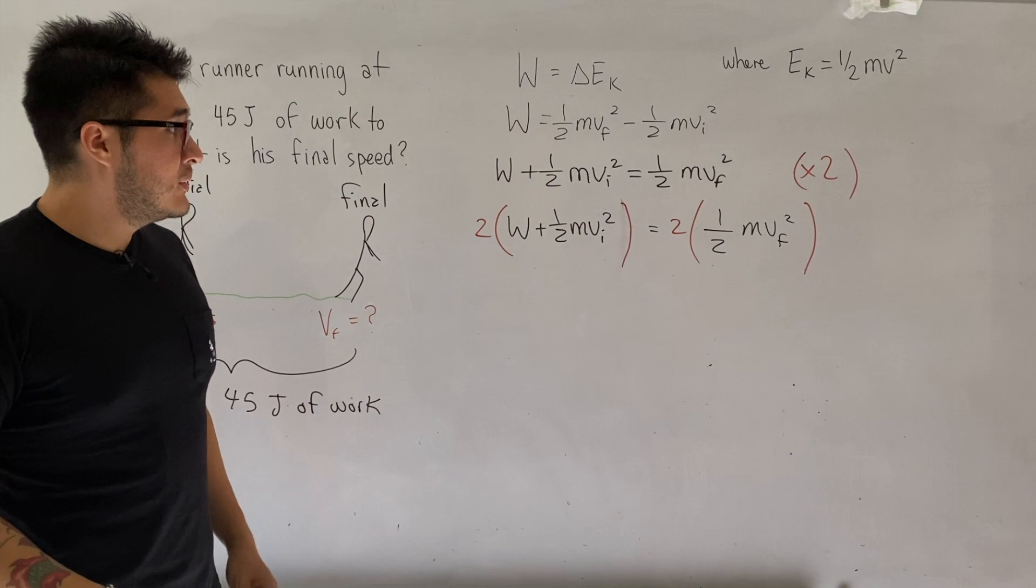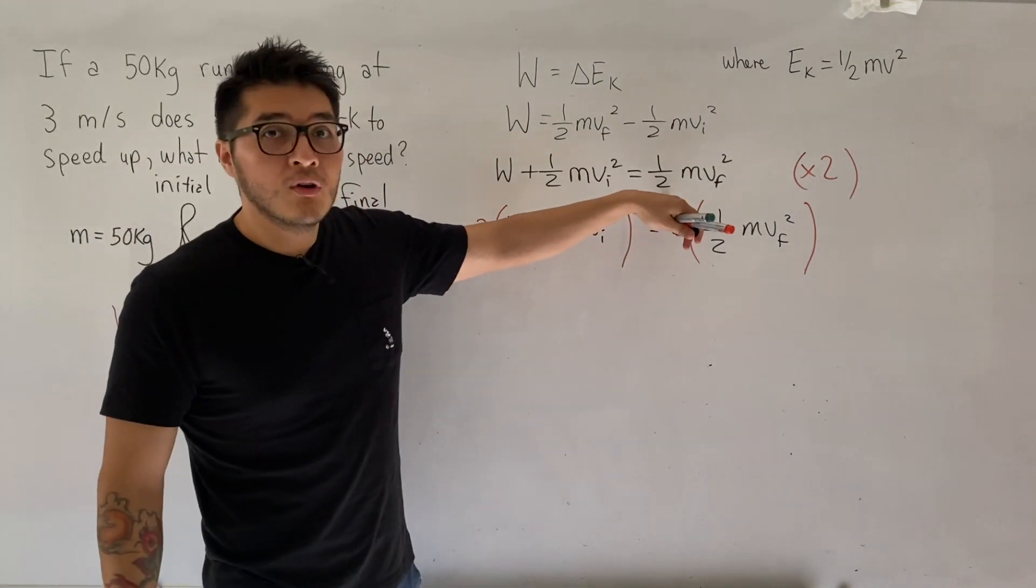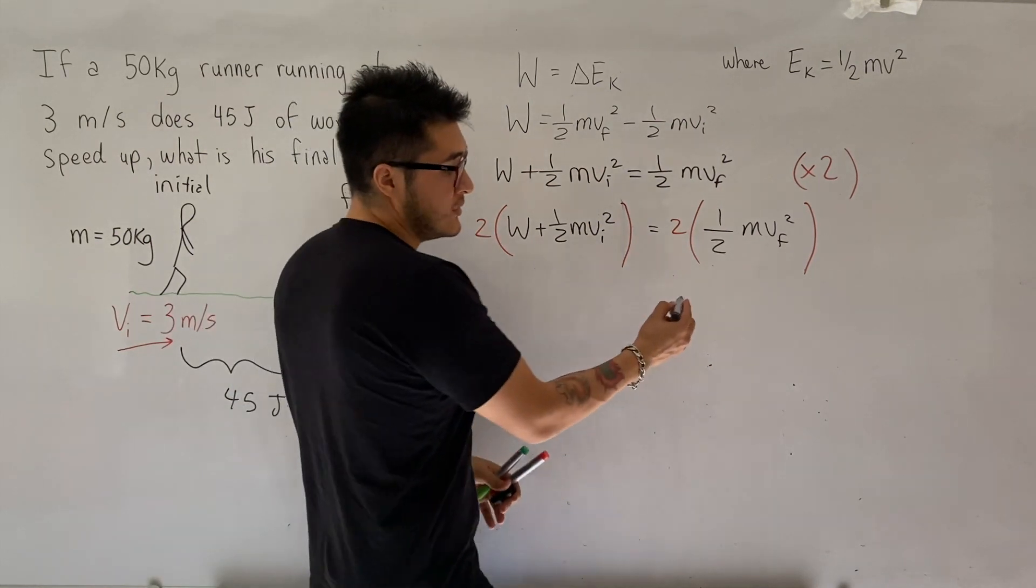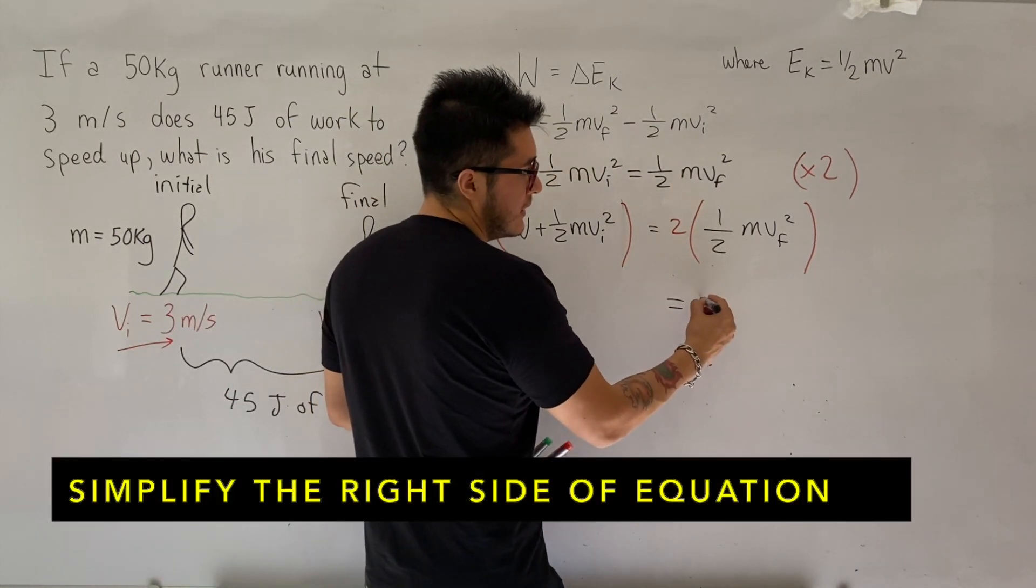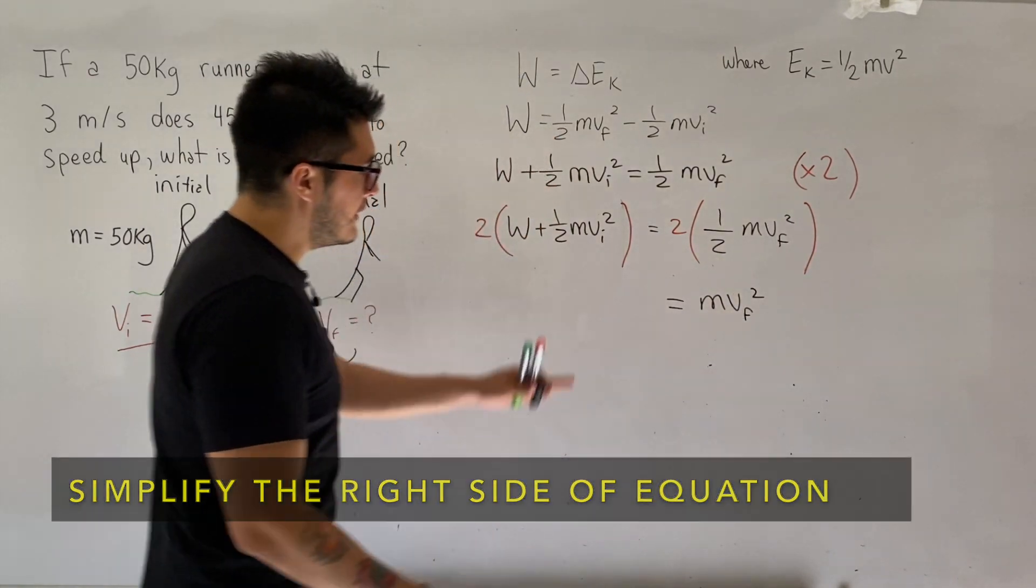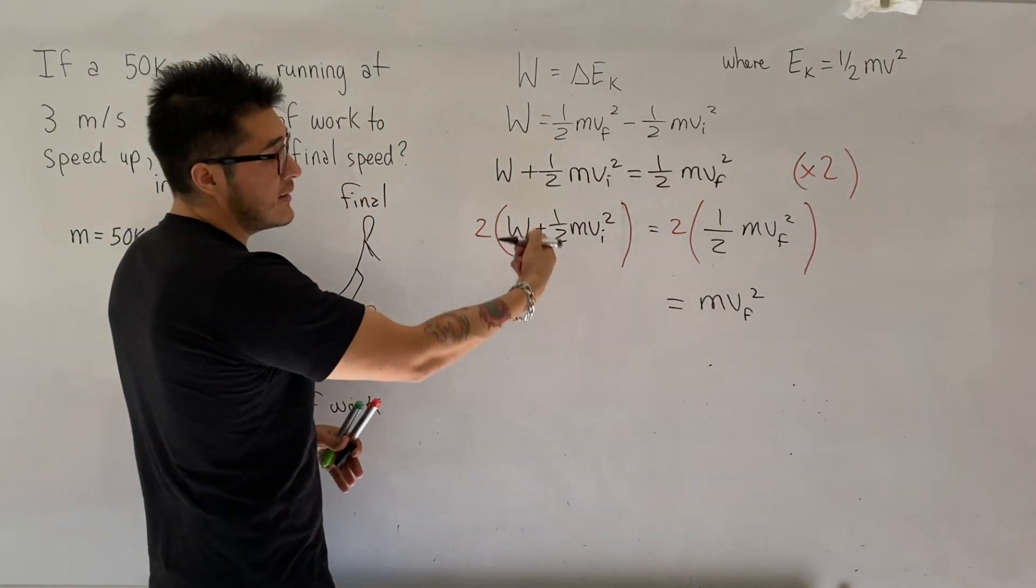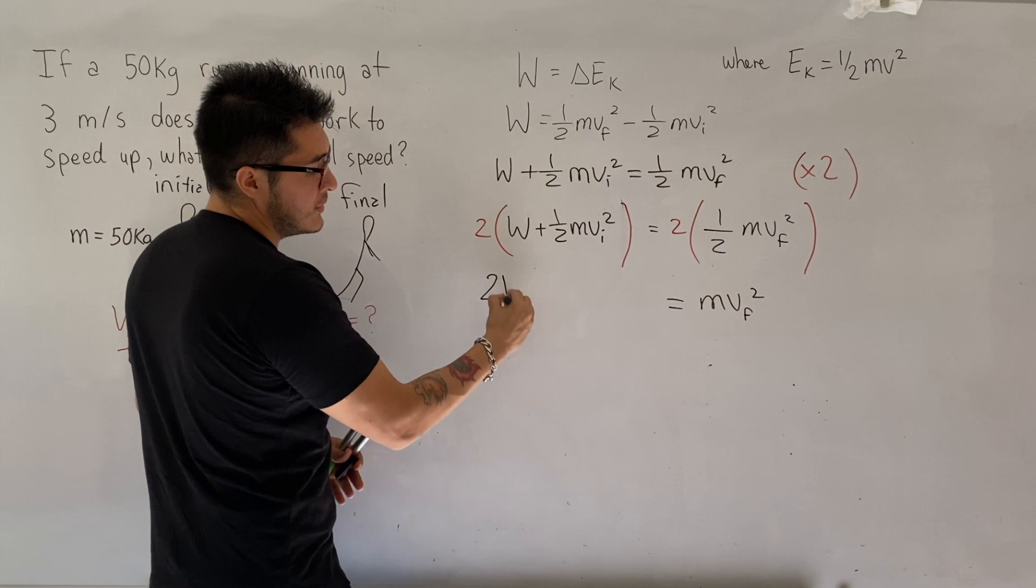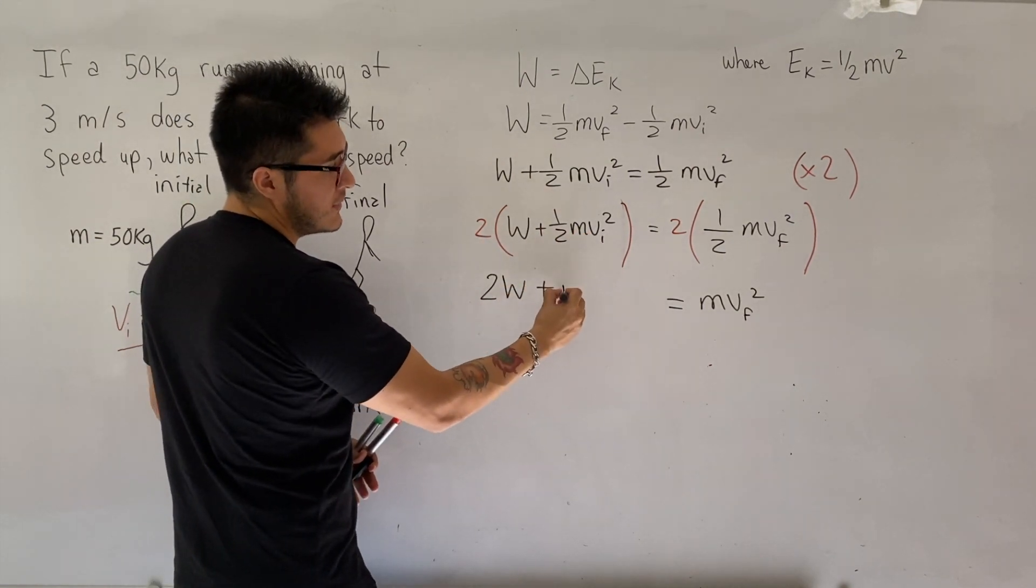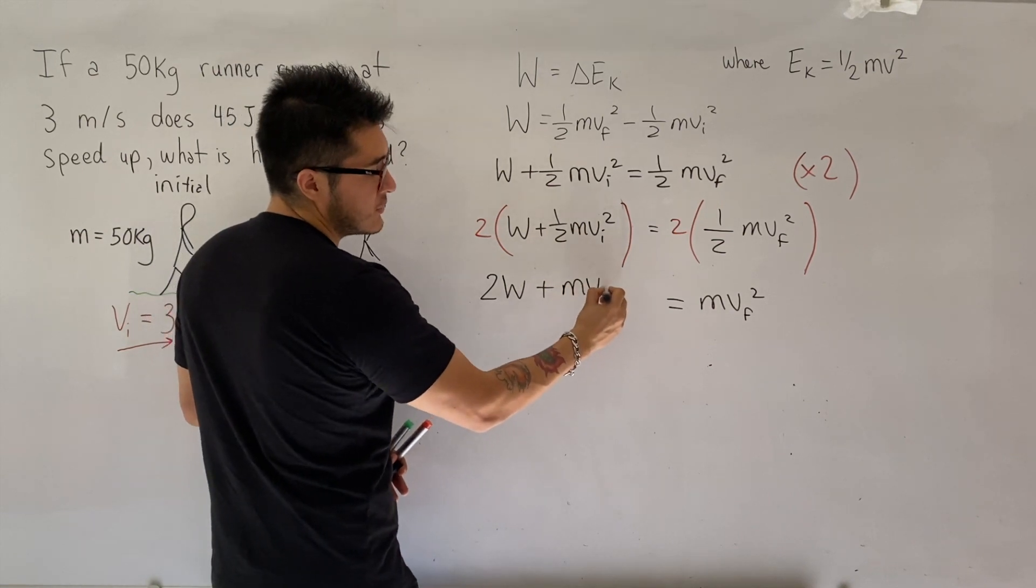All right, so when you multiply by 2, that's just going to get rid of the 1/2 from the right side. So we can simplify the right side to be just mv final squared. And the left side, we expand it up. So 2 times w, 2 times 1/2. That will cancel out, so it will just be mv initial squared.